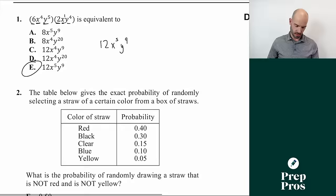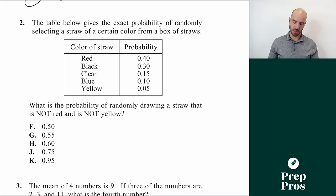Number two is a probability question. The table gives the exact probability of randomly selecting a straw of a certain color from a box of straws. We're asked for the probability of not picking red and not picking yellow. We count the remaining probabilities and add them: 0.3 plus 0.15 plus 0.1 gives us 0.55. The answer is G.